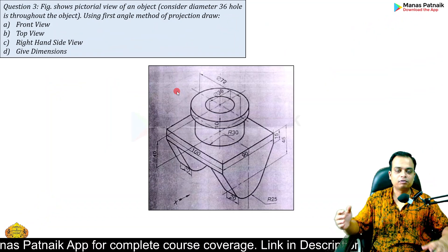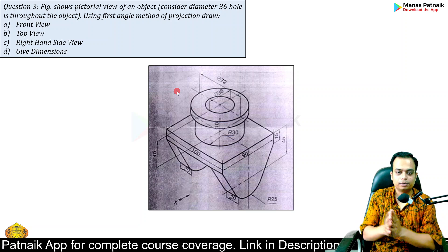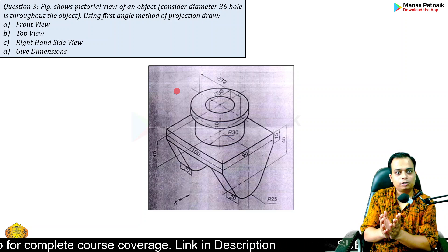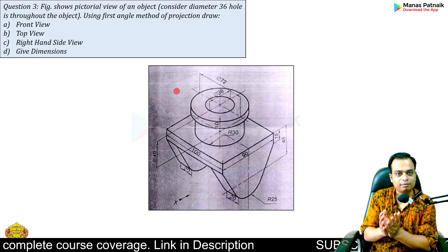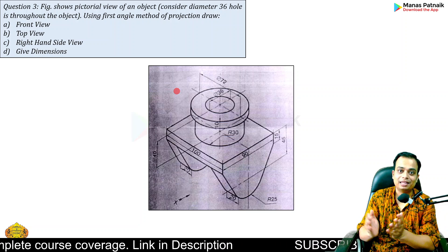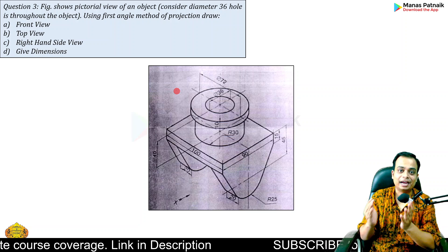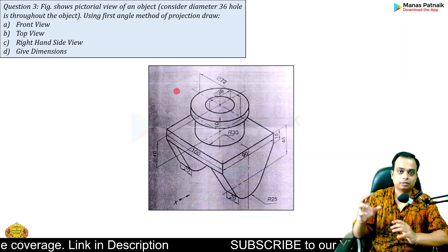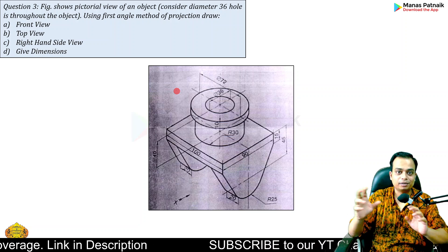First we need to work out the maximum dimensions — the maximum length, width, and height. Based on these we are going to make our boxes for the front, top, and side views.